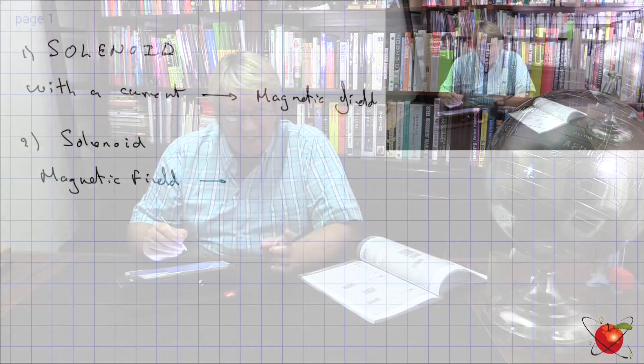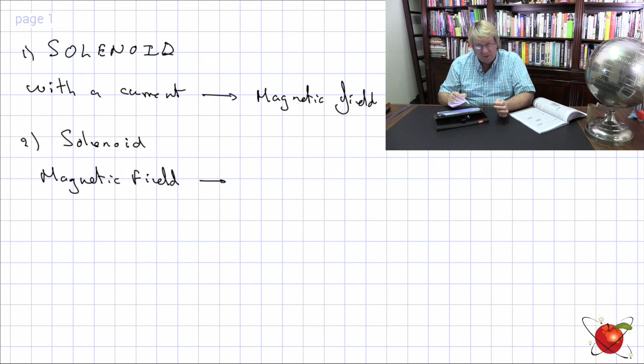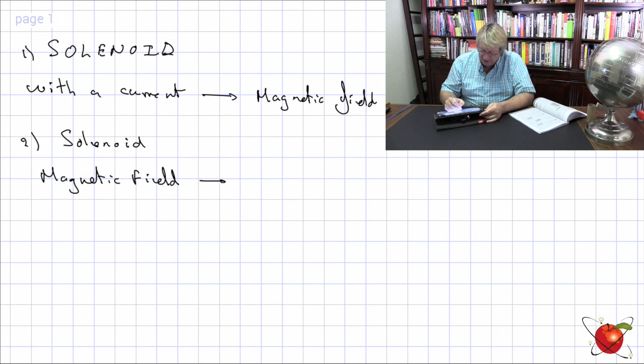As opposed to where we had it creating a magnetic field, we've now got the magnet. Now what happens? We find that exactly the same, but the opposite. We had a solenoid with a current, we ended up with a magnetic field. Now if we've got a solenoid with a magnetic field, we end up with a current. So, yes, we've made electricity.